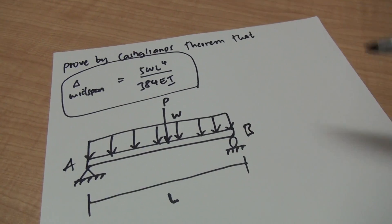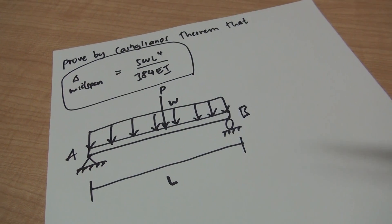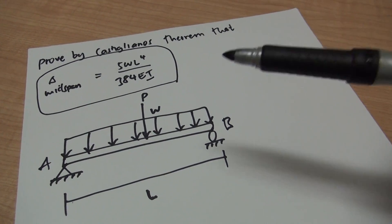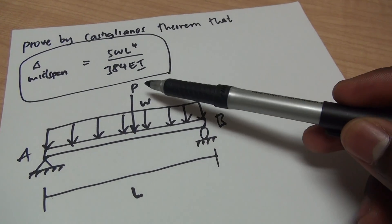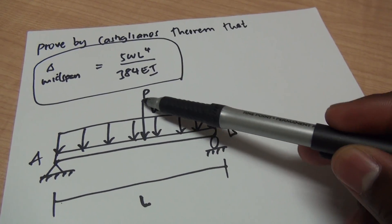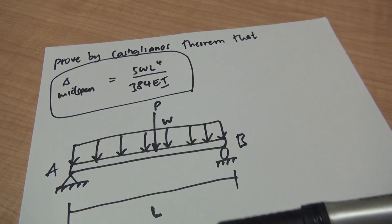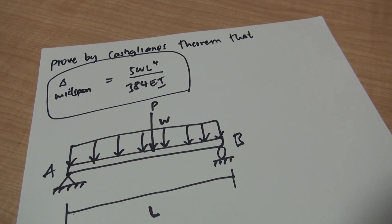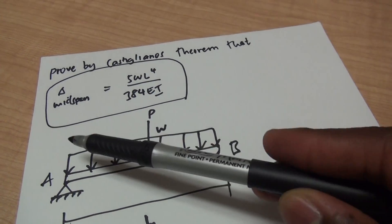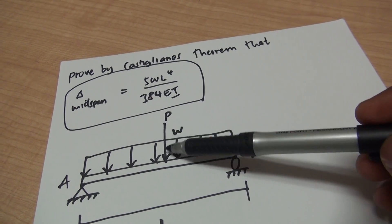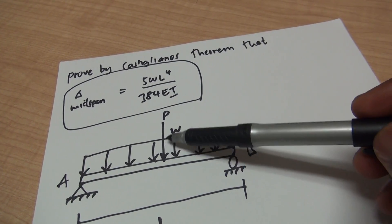Where you want to find the deflection, just insert an unknown force P — just like I did here. In this case we want to find it at mid-span, so that's why I put my force P right in the center.